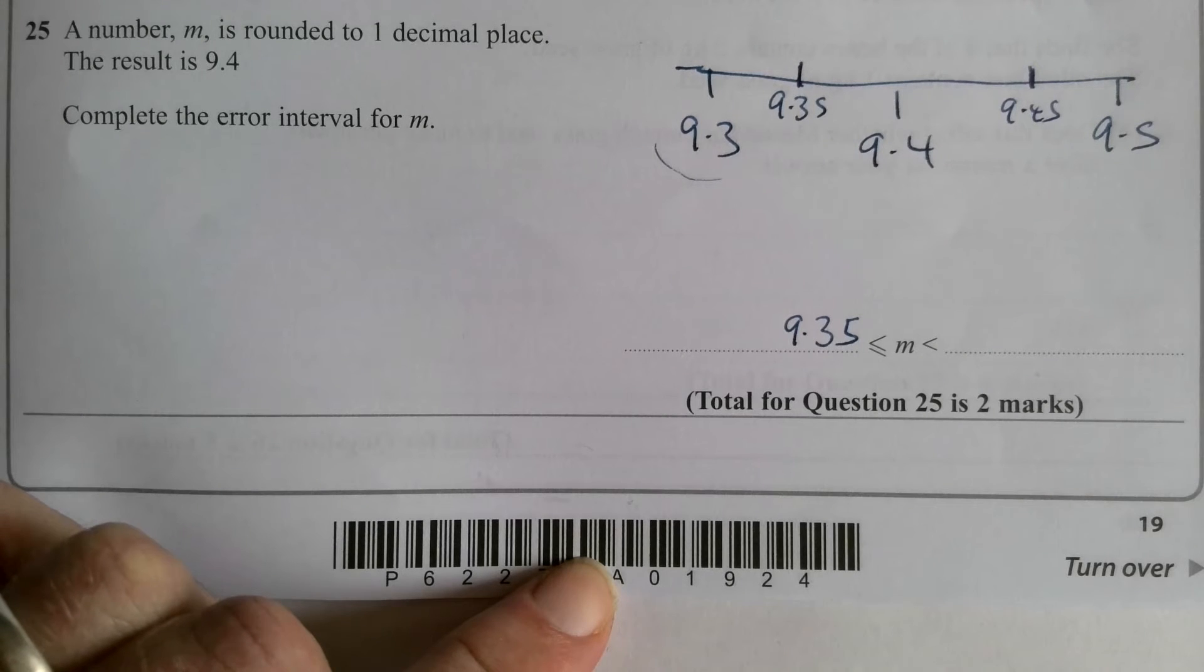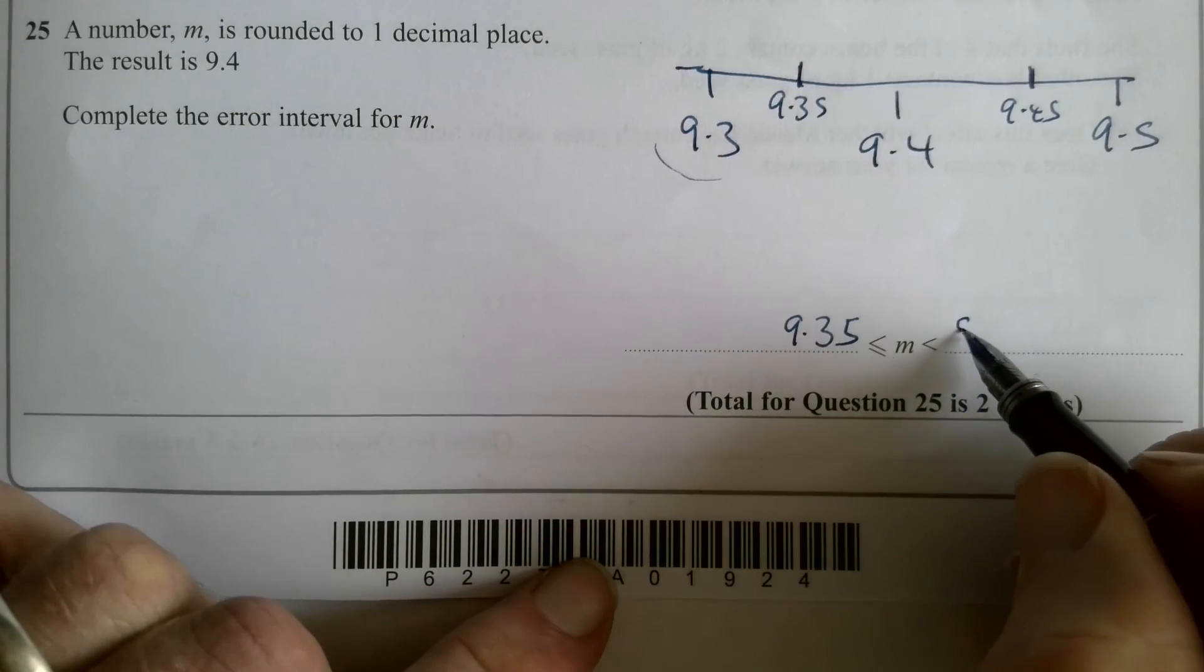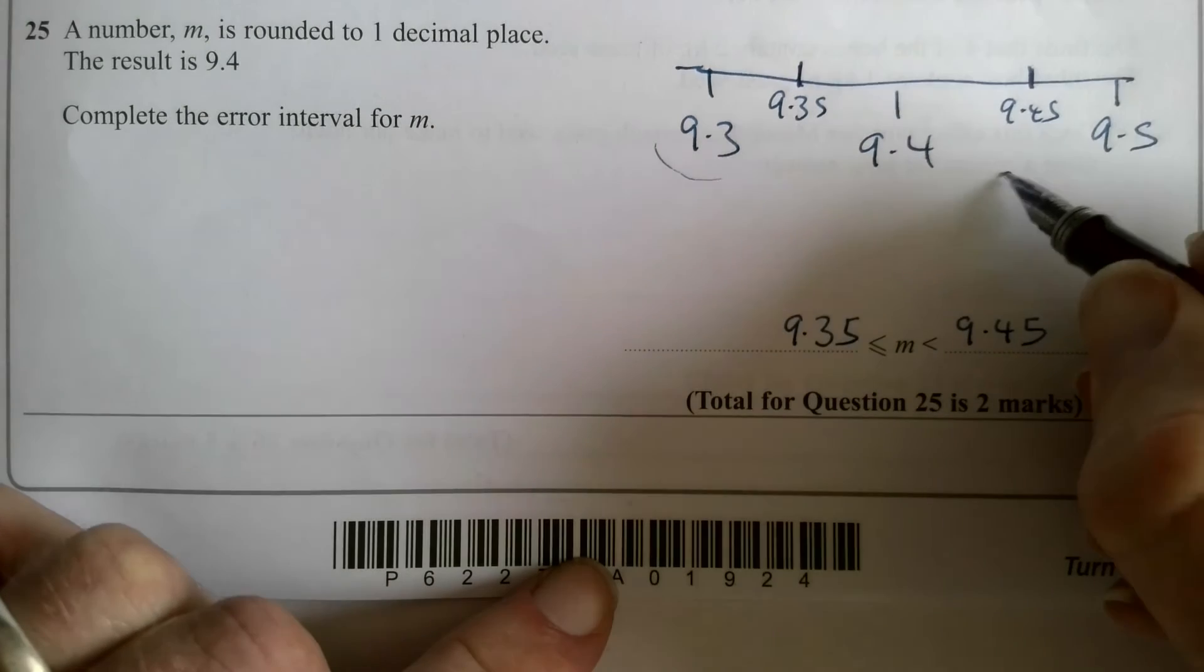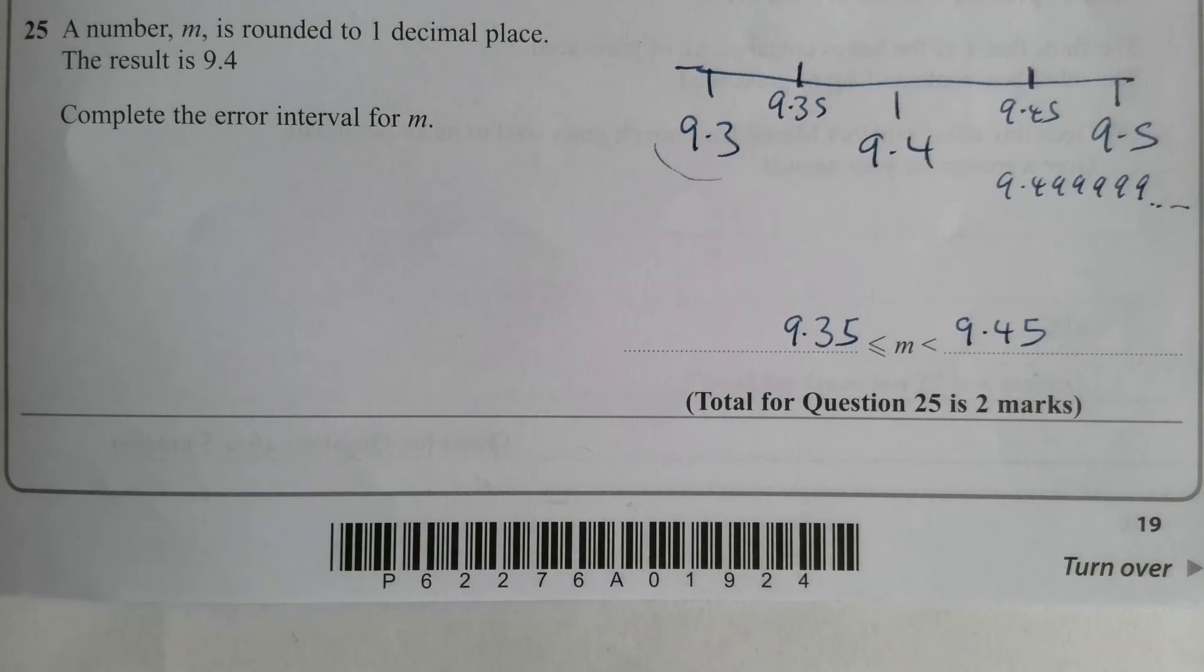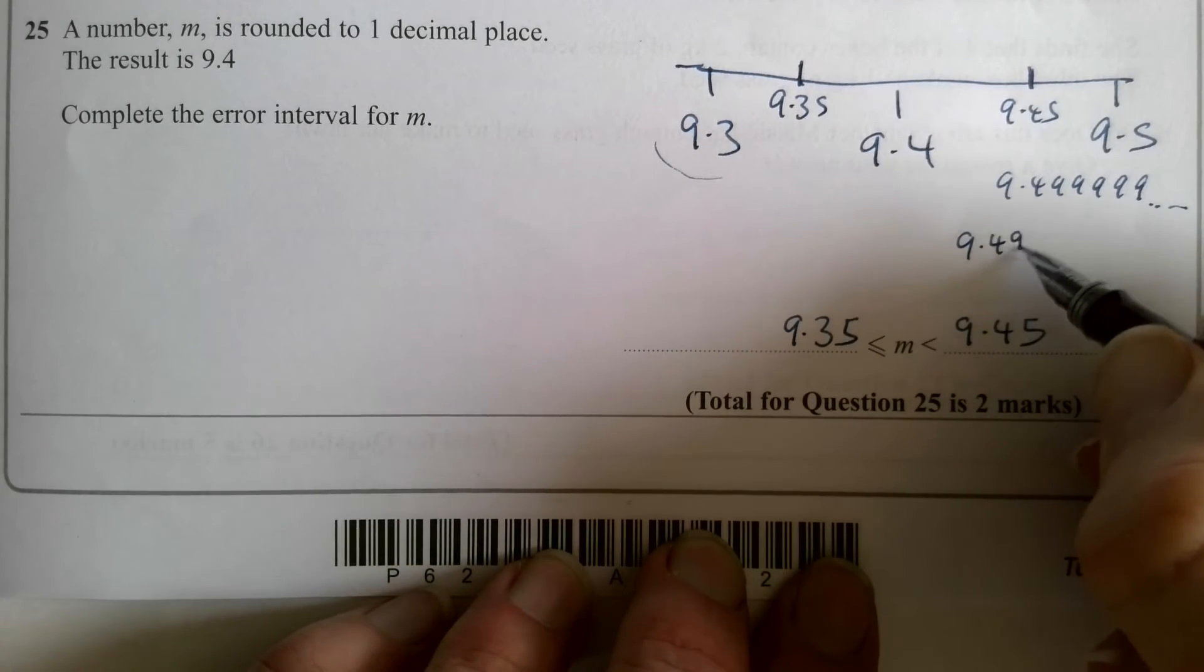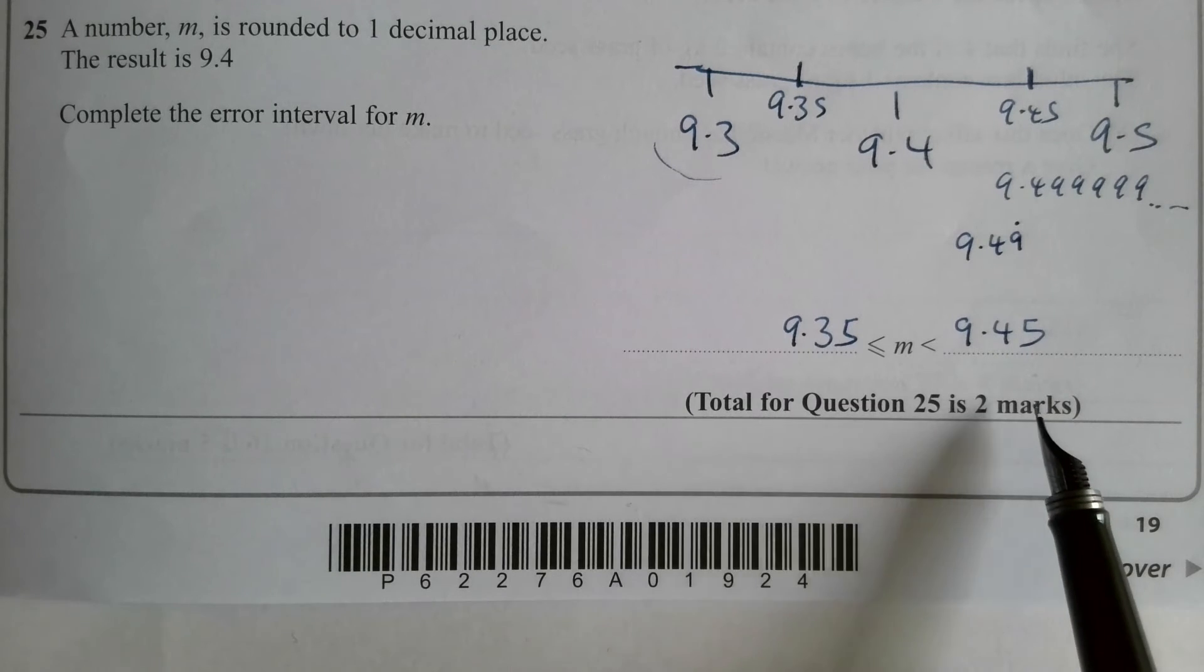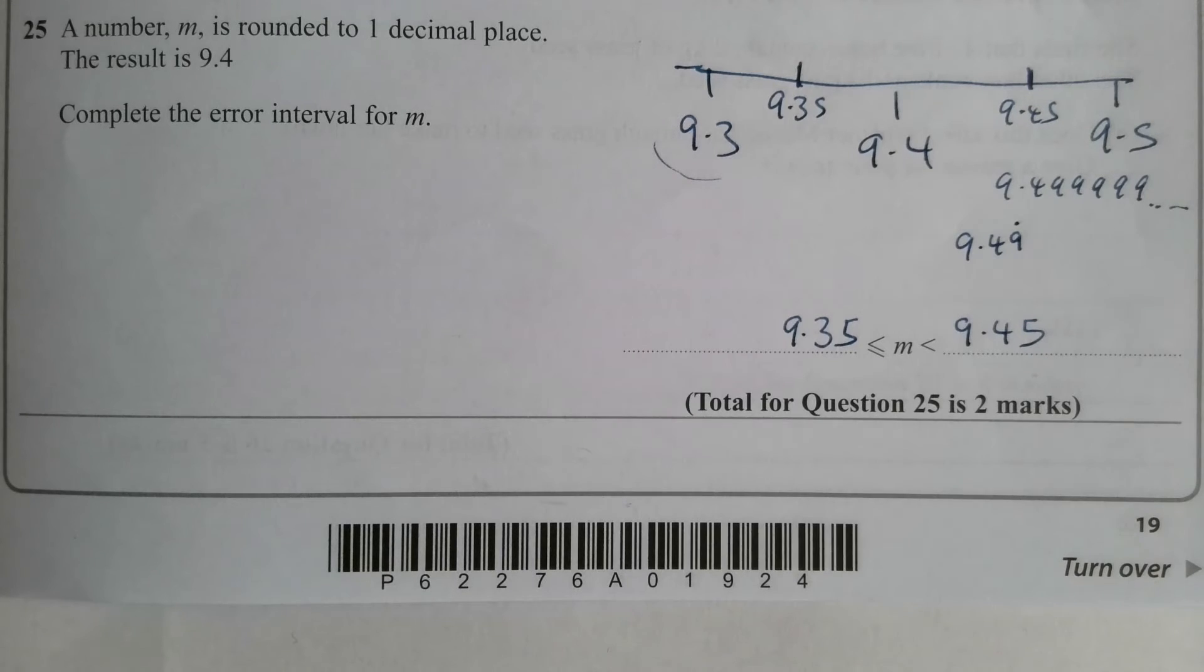Then it says smaller than. So the point at which 9.45 would round up to 9.5, wouldn't it? But 9.4499999 would round down to 9.4. So we need to put 9.45, because we've got no idea how many nines someone might decide. They could always have another one, couldn't they? So 9.45 would be fine. And in fact, there is an alternative. If you put 9.49 recurring, you still get full marks. Two marks for it. One for that one, one for that. Exactly as you see there.